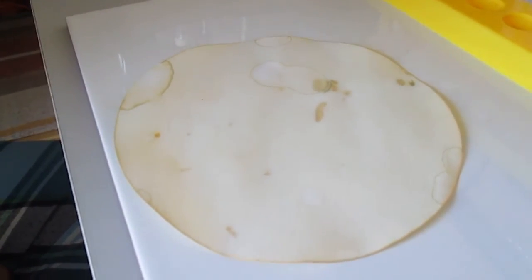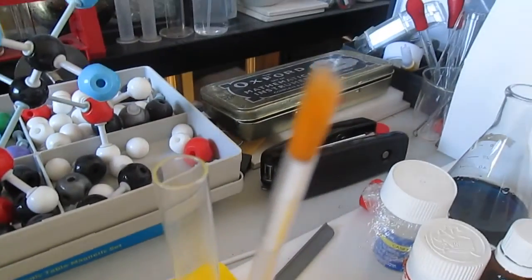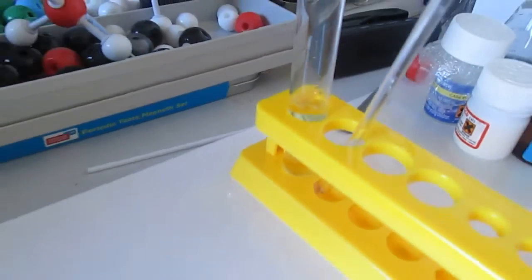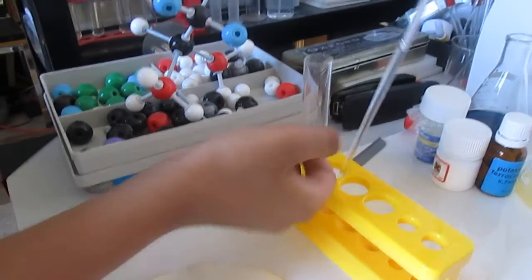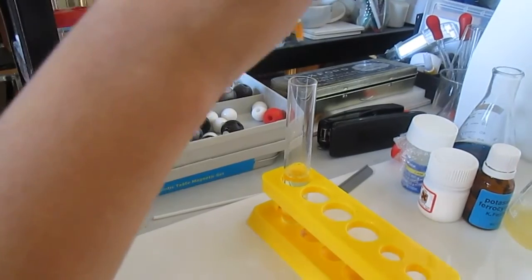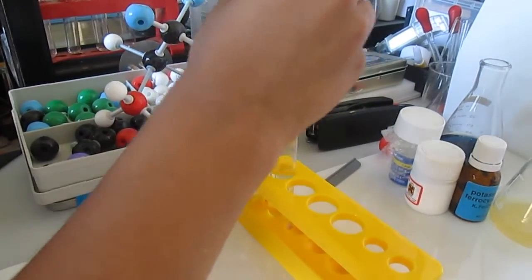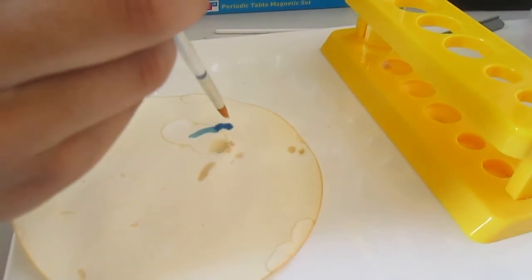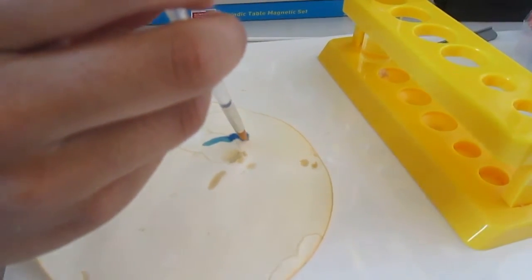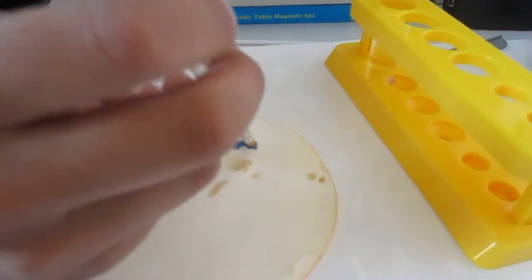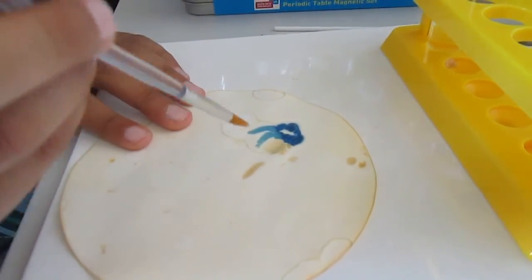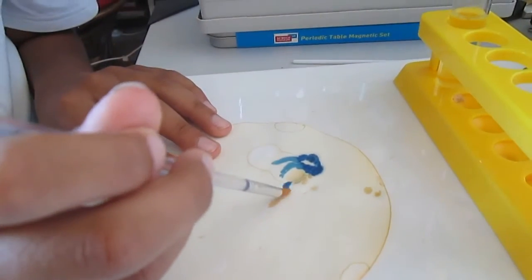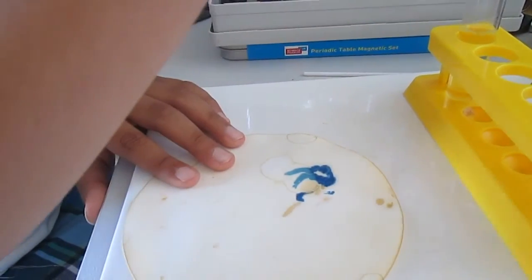I will now dip the paintbrush in a clear solution of potassium ferrocyanide and start writing on the filter paper with it. There we go.